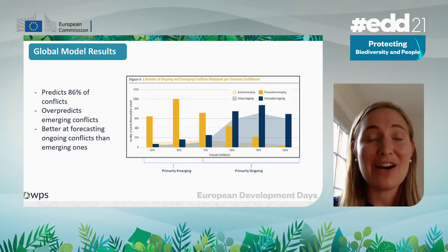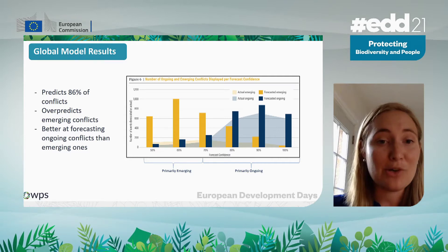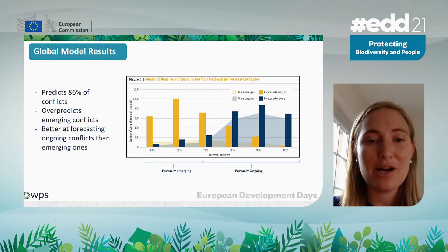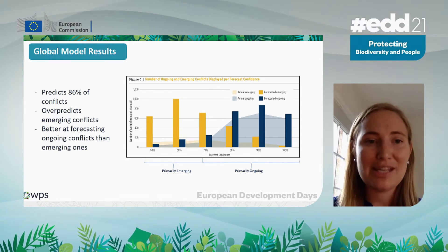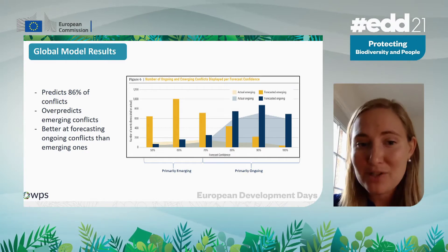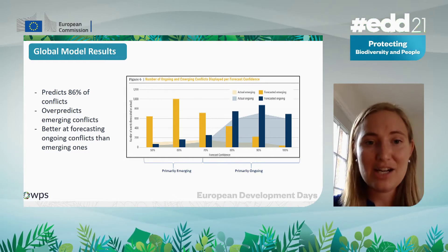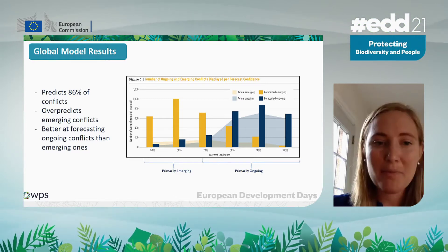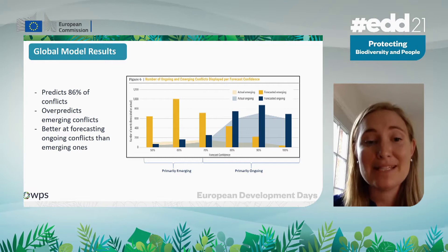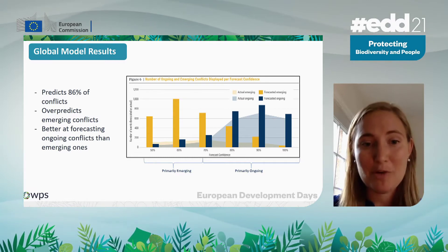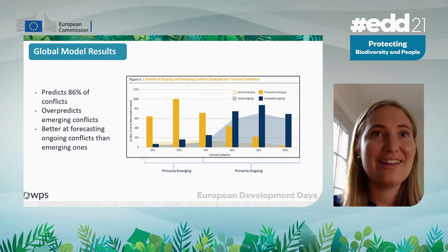Our model is able to predict 86% of all conflicts. The yellow bars show where our model predicted emerging conflict, and the blue bars show where we predicted ongoing conflicts. Between 50% and 70% is often where emerging conflict is, and we usually do predict that. We do over-predict in many areas, but we don't see that as a problem because we want our global model to be a screening tool — we don't want to miss any locations. Our ongoing conflict prediction is pretty accurate.